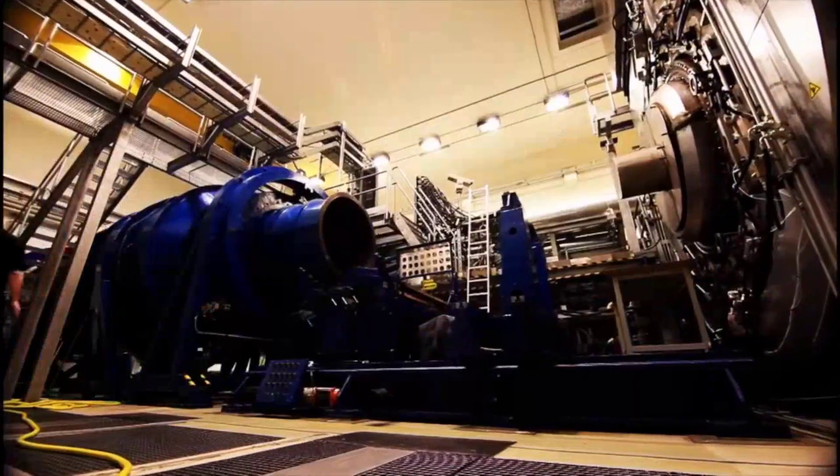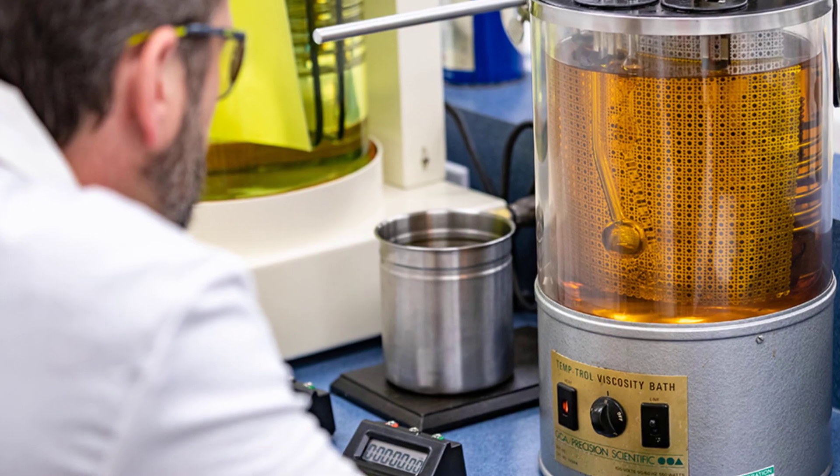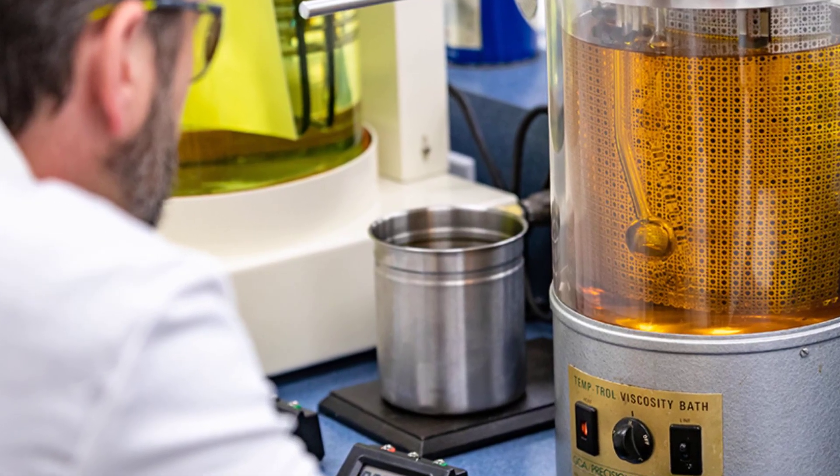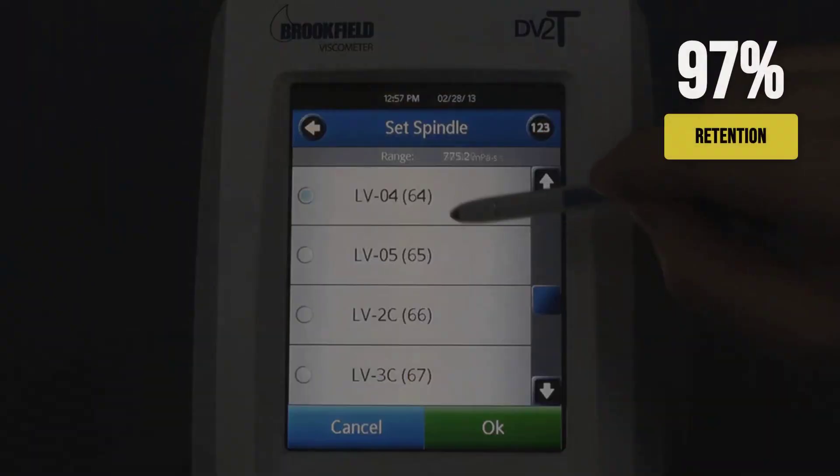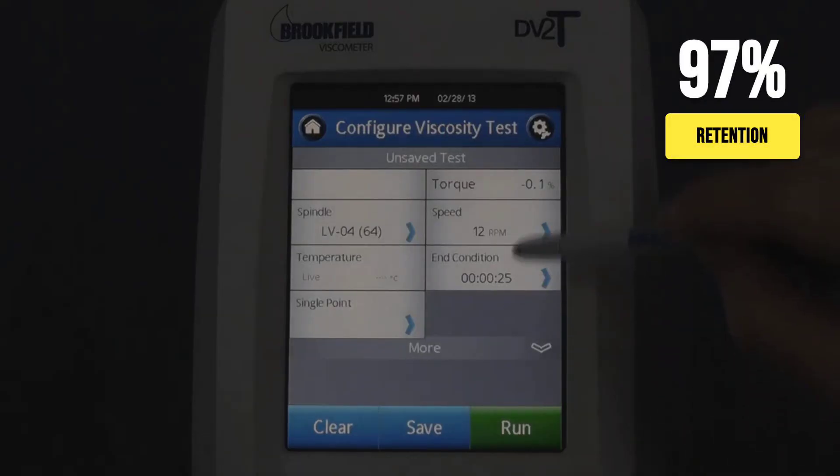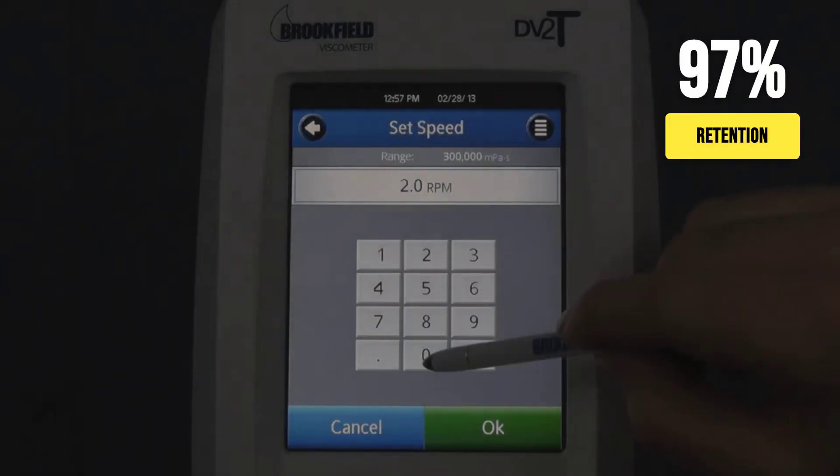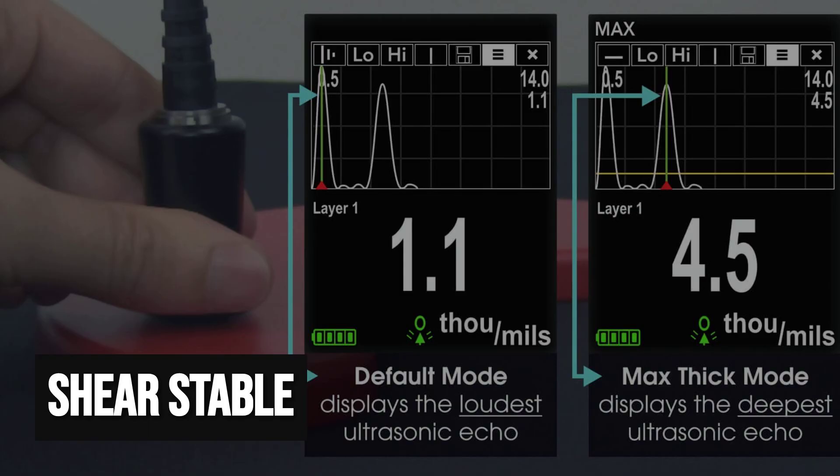Its blend uses fewer of these modifiers, leaning instead on a robust base stock to maintain film strength. After hours of mechanical shearing, lab tests show a minimal drop in viscosity, with film thickness staying well within grade.